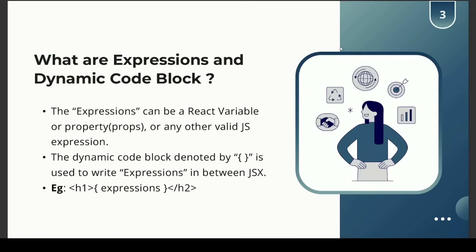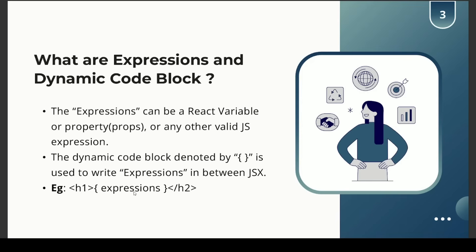So what are expressions and dynamic code blocks? Expressions can be any JavaScript code, a React variable, props, or any state — these are all considered expressions. The dynamic code block is denoted by curly braces and is used to write expressions inside JSX. For example, if a variable is dynamic, it must be defined inside the curly braces.